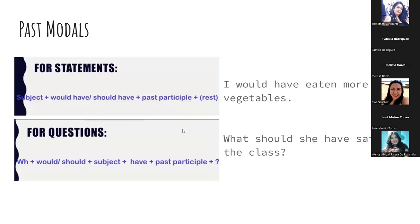The formula is: subject + would have / should have + past participle. To use this, we need to know past participles. For example: 'I would have eaten more vegetables' — 'eaten' is the past participle of 'eat.' For questions: wh-word + would/should + subject + have + past participle. Example: 'What should she have said in class?' Any questions about past modals? Everything clear.